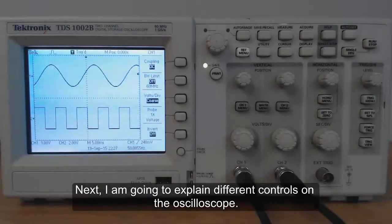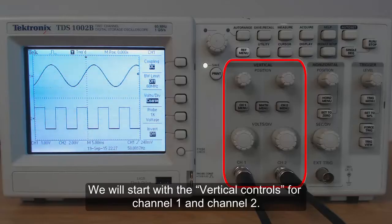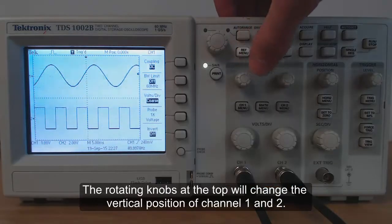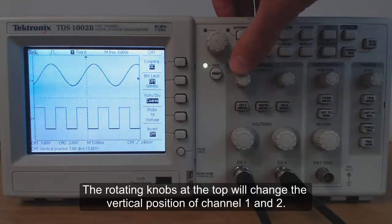Next I am going to explain the different controls on the oscilloscope. We will start with the vertical controls for channel 1 and channel 2. The rotating knob at the top will change the vertical position of channel 1 and channel 2.